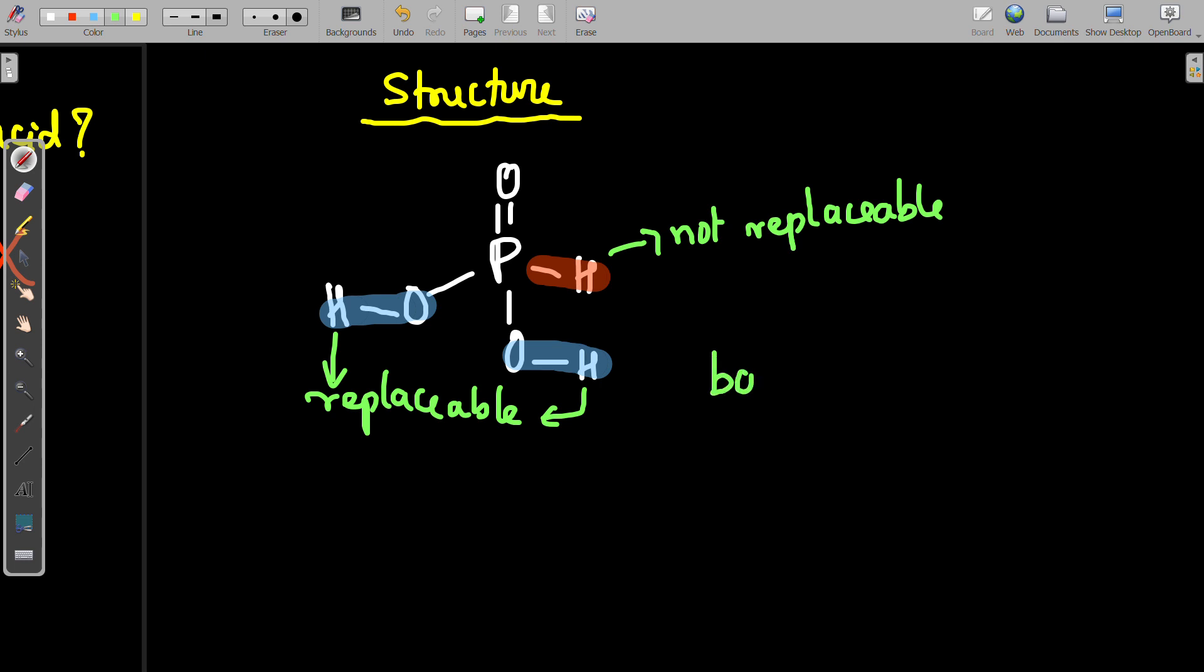Hence, the basicity of phosphorus acid is two. You may think, what may be the basicity of phosphoric acid?